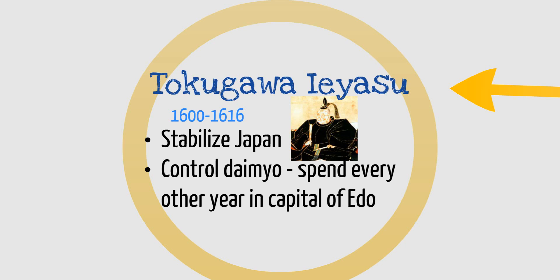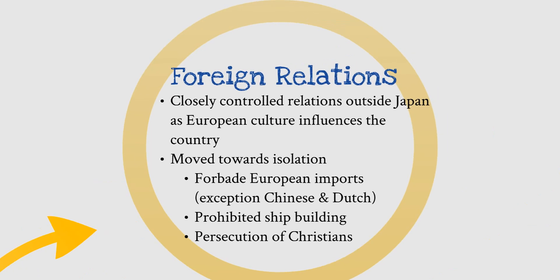He really set up a well-organized government within Japan. Now, something unique about this time is that foreign relations were not going to be great with those outside of Japan. Japan thought this was splendid isolation — the shogun would really closely control relations outside Japan, as they believed European culture was influencing their country and they wanted to get rid of that. So they moved towards isolation, which we've seen China do many times before in history. They forbade European imports, with the exception of Chinese and Dutch imports.